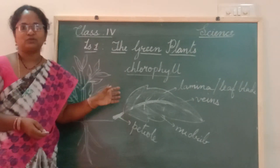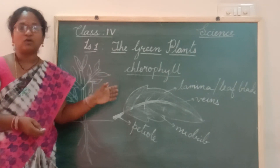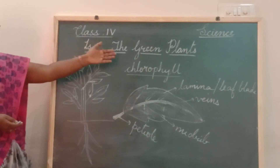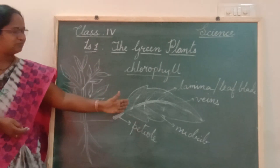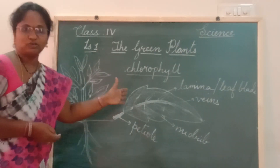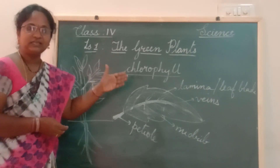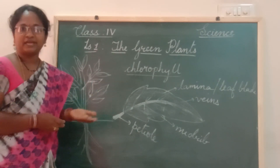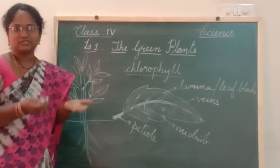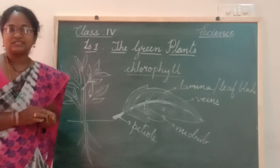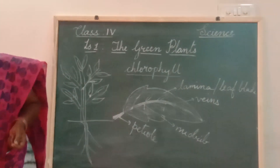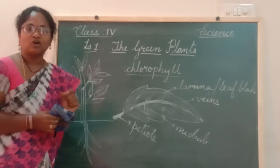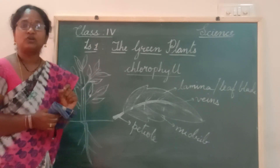Why do we study about the structure of the leaf? The leaf prepares the food for the plant. How does it prepare the food? What is the process called? That process is called photosynthesis — the process of preparing food is called photosynthesis.